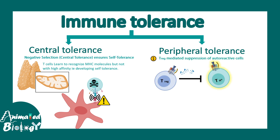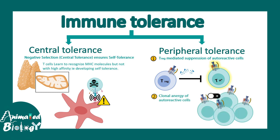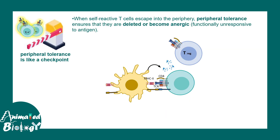In peripheral tolerance, one key player is the regulatory T cell, which can suppress auto-reactive T cells. There are also mechanisms known as clonal anergy and peripheral deletion, which help eliminate auto-reactive cells and protect our body from harmful auto-antibodies. When self-reactive T cells escape to the periphery, peripheral tolerance ensures they are deleted or become inert. You can imagine this entire tolerance system as a two-way password checking system, like two-factor authentication in your Gmail account.